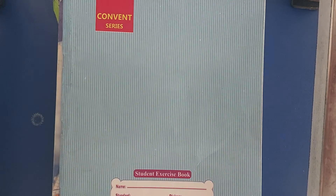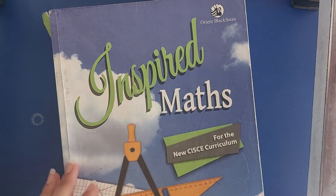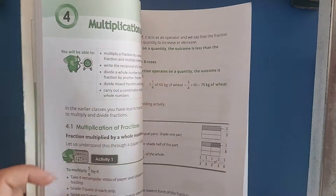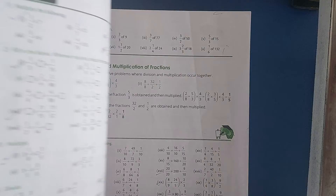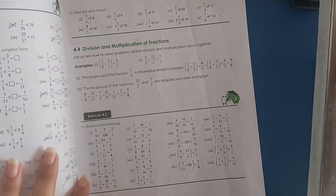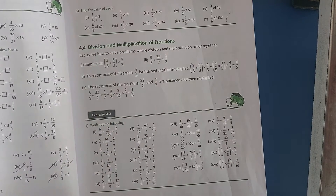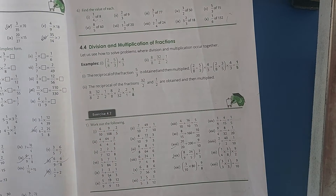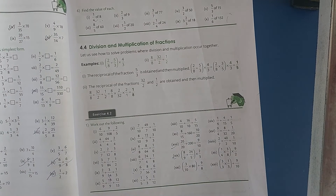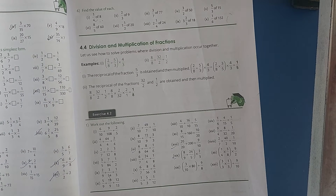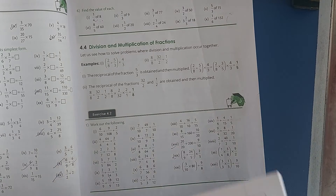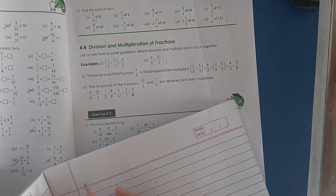So now, let us start our chapter. Today, we are going to do Exercise 4.2. Open your books to Exercise 4.2, page number 45. In this exercise, we have to work out the following — we have to solve the division problems given. The division is very much similar to the previous division. So now, let me do a few questions for you.